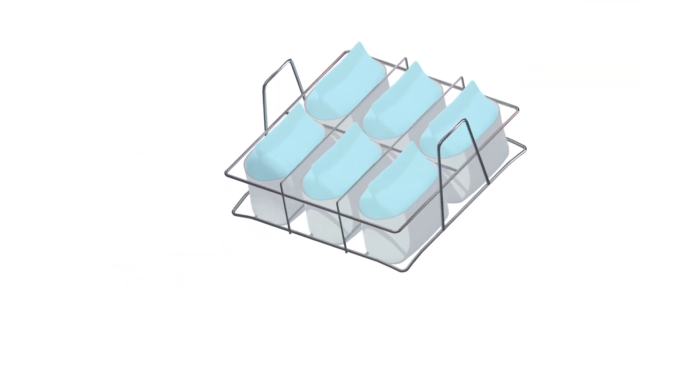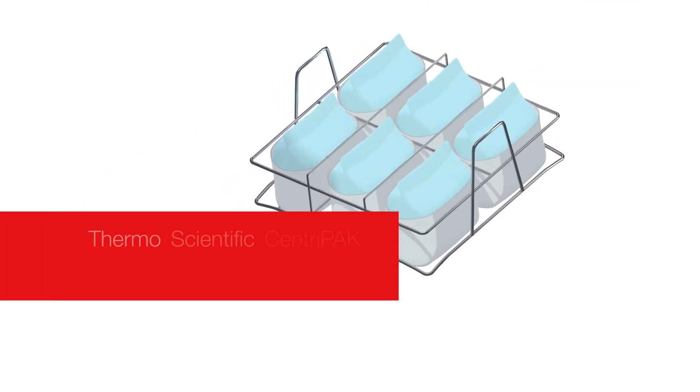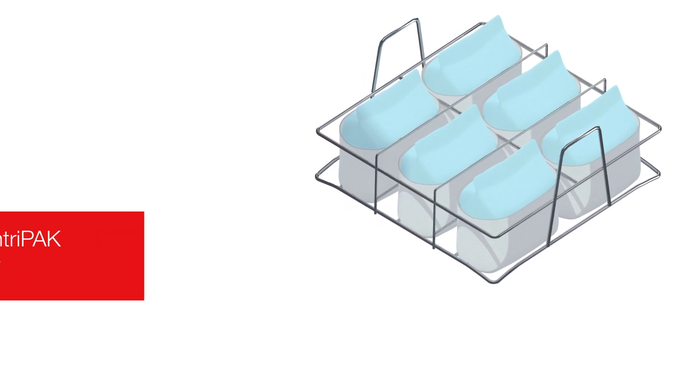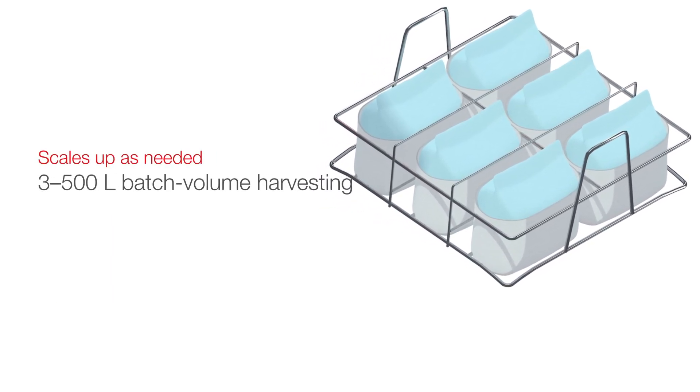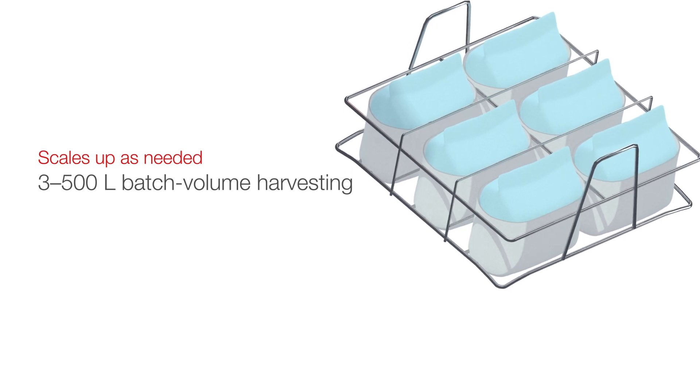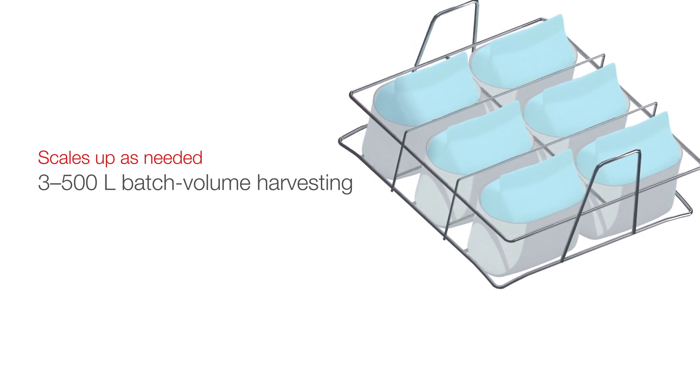Consider the closed, sterilized, single-use system created with the next-generation SentryPak Bioprocess container. It scales out as needed with the Sorvall BIOS 16 centrifuge, enabling gentle, high-throughput and high-efficiency 3 to 500 liter batch volume harvesting.